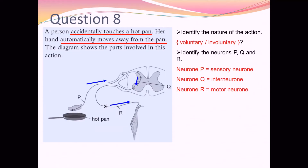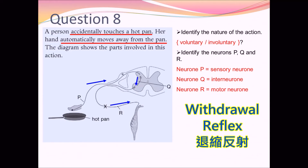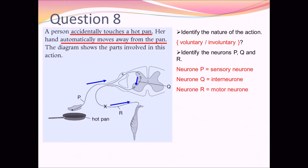Question 8 tells another story: a person accidentally touches a hot pan and automatically withdraws her hand. The first thing you need to identify is the nature of this action — voluntary or involuntary. Since she accidentally touched the pan, she did not perform the action intentionally, so it must be an involuntary action. Good practice: name all the cells first. Neuron P is the sensory neuron, neuron Q is the interneuron, and neuron R is the motor neuron — these form the reflex arc.